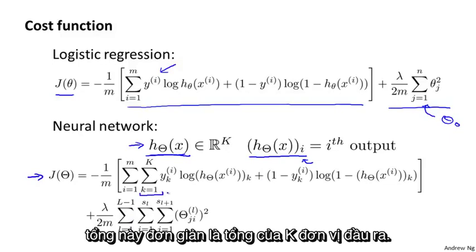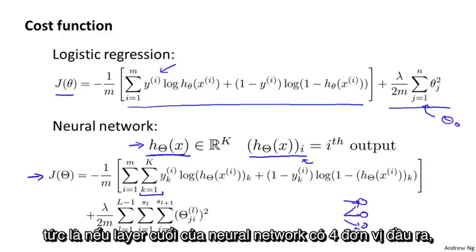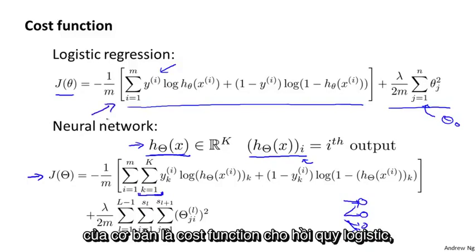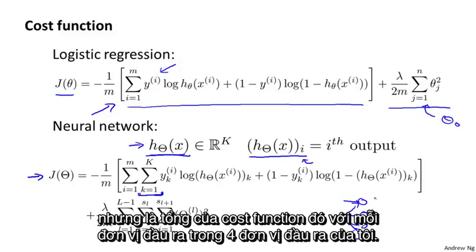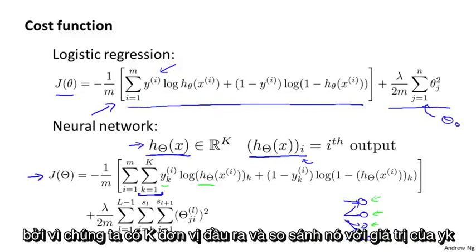This summation is basically a sum over my K output units. So if I have four output units, that is if the final layer of my neural network has four output units, then this is a sum from k equals one through four of basically the logistic regression algorithm's cost function, but summing that cost function over each of my four output units in turn.